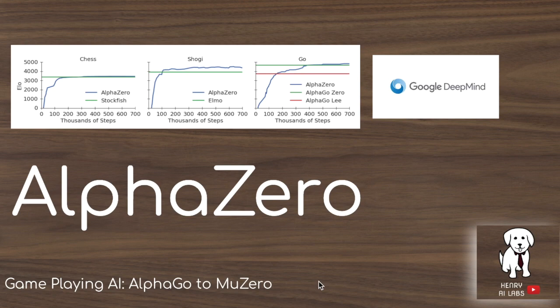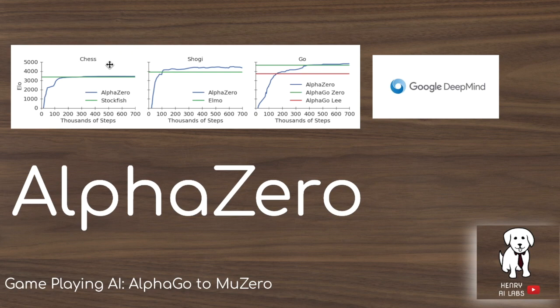Thanks for watching this explanation of the AlphaZero paper. AlphaZero doesn't make too many dramatic changes to AlphaGoZero, but the key idea is extending the algorithm to be more general — going from just playing Go to playing shogi and chess as well. This is achieved through a new input state representation and demonstrating the generality of the Monte Carlo tree search self-play framework across games requiring long-range dependency modeling, more complex reward structures, and asymmetric boards that don't allow data augmentation. Please subscribe to Henry AI Labs for more deep learning and AI videos.